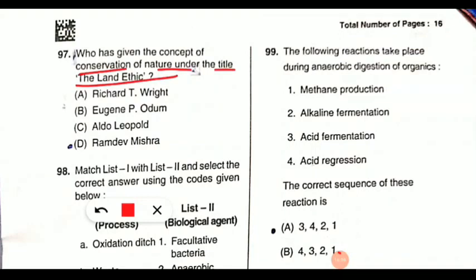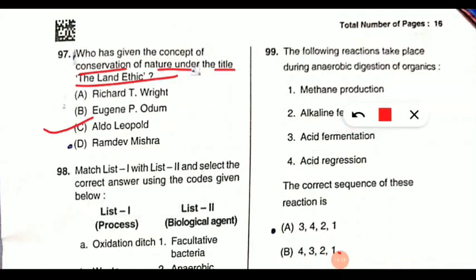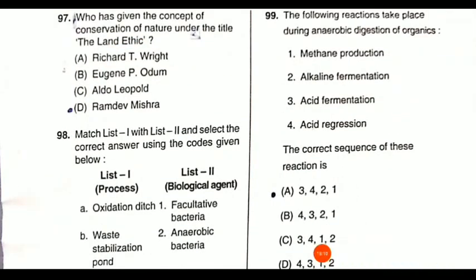Question 97: who gave the concept of conservation of nature under the title 'The Land Ethic'? This concept was given by Aldo Leopold. Option C is the correct answer. You should note down: Aldo Leopold — The Land Ethic.